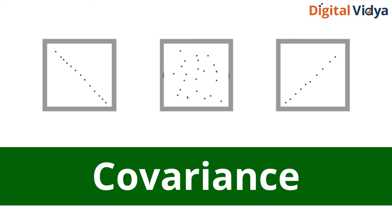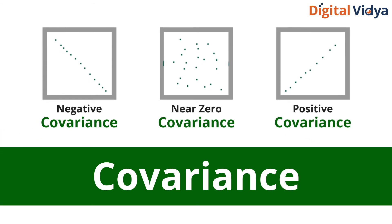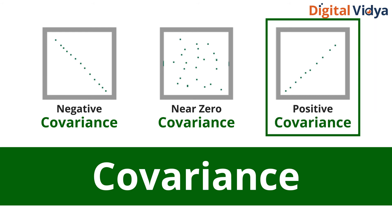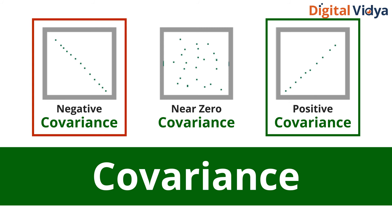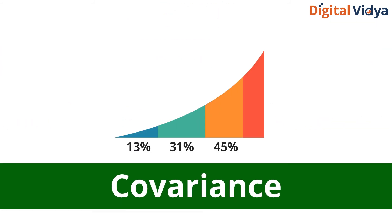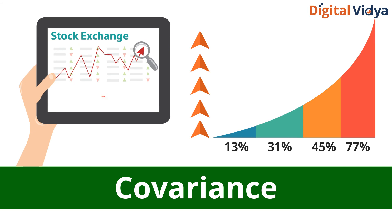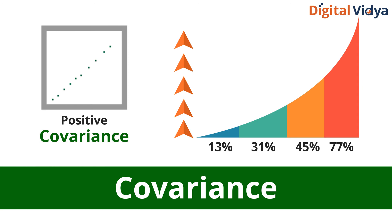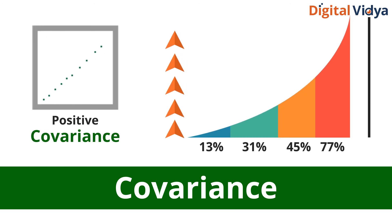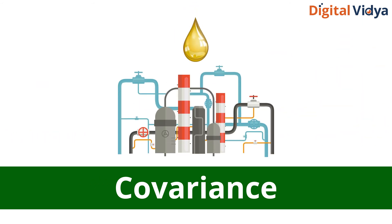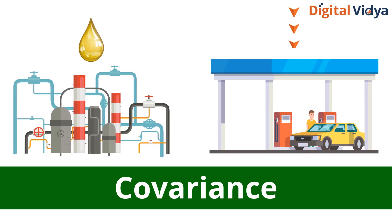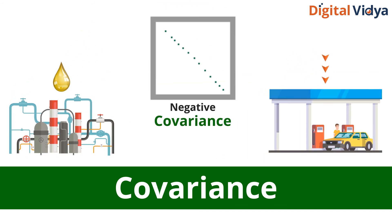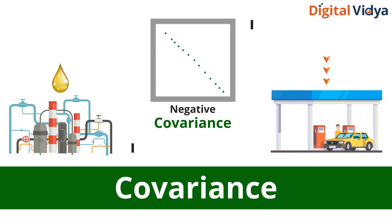Moving on to covariance — it is a measure of the joint variability of two variables. It is positive if one variable increases with an increase in another variable, and negative if one variable decreases with the decrease in another. For example, as economic growth increases, stock market returns tend to increase as well — these variables have positive covariance. Conversely, as world oil production increases, gasoline prices fall — these variables have negative covariance because they move in opposite directions.